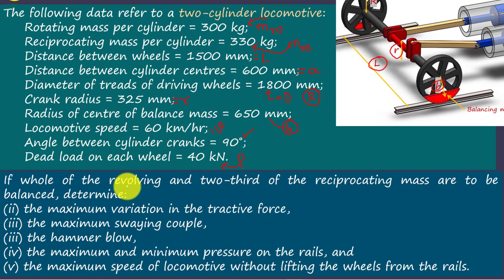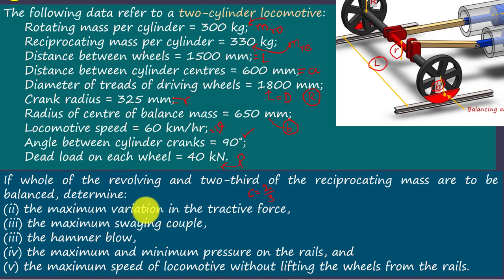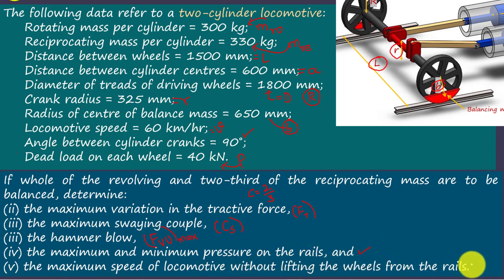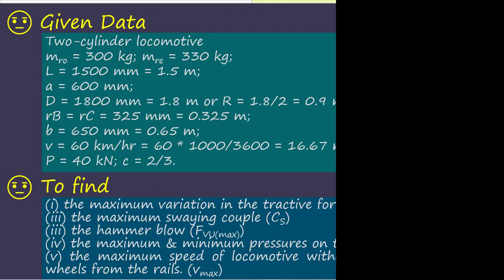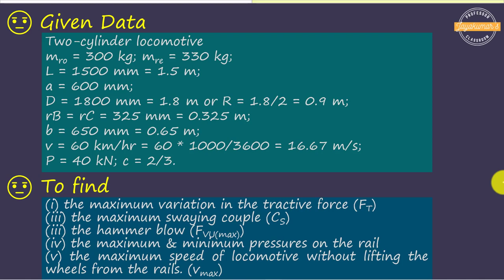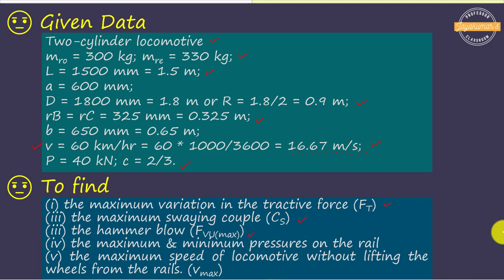If whole of the revolving and two-thirds of the reciprocating mass are to be balanced — so C is given as two-thirds of the reciprocating mass, with whole of the revolving mass to be balanced — determine: maximum variation in the tractive force, maximum swaying couple, hammer blow, maximum and minimum pressure on the rails, and maximum speed of locomotive without lifting the wheels from the rails. From the diameter of the wheels, I found the radius of the wheel. They have given velocity in km per hour, which I have converted to metres per second.